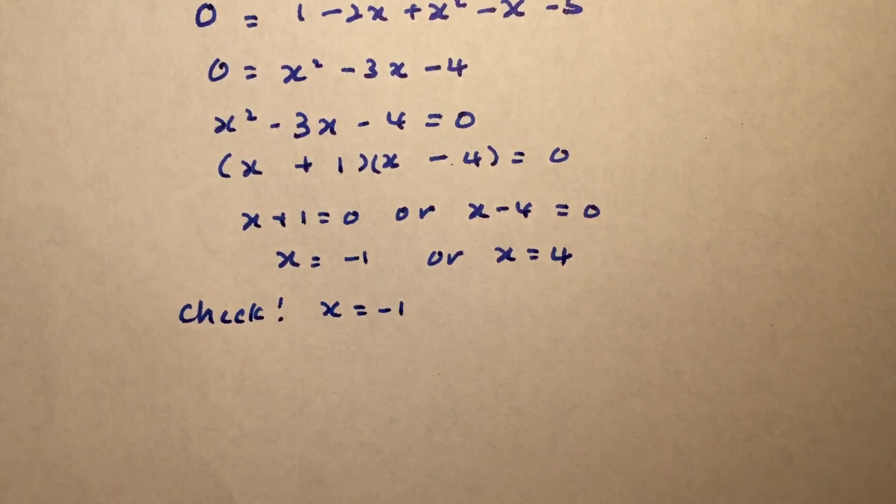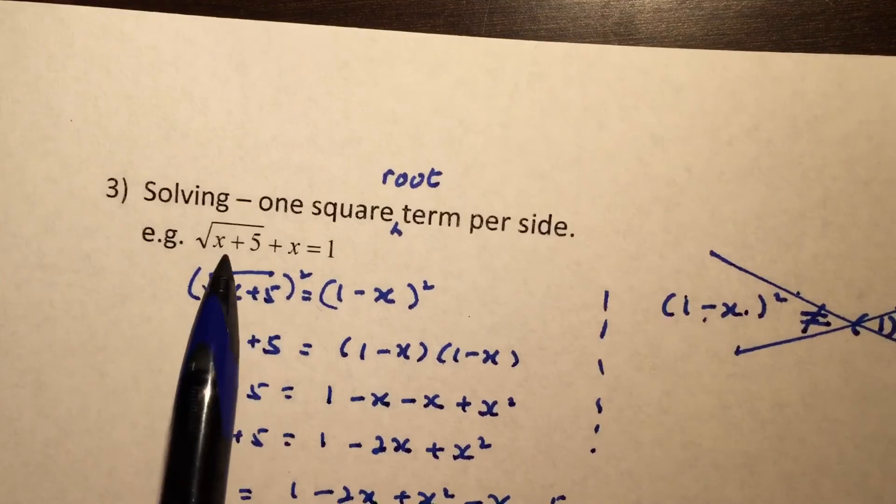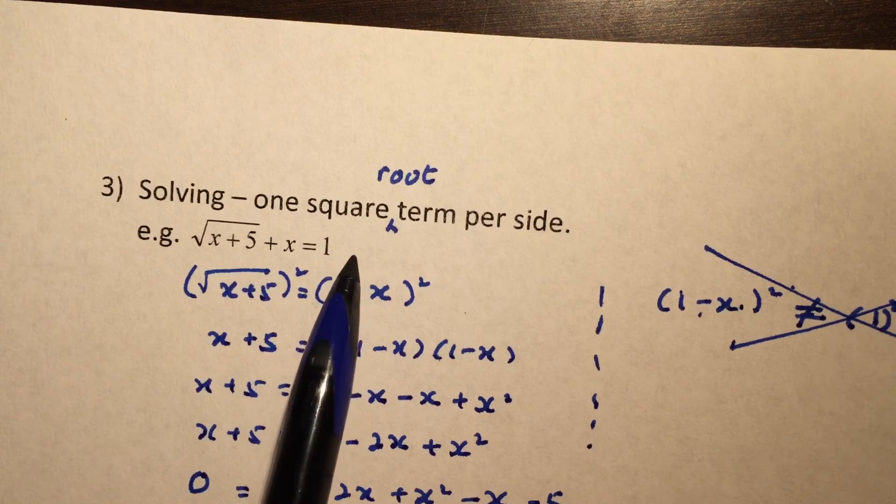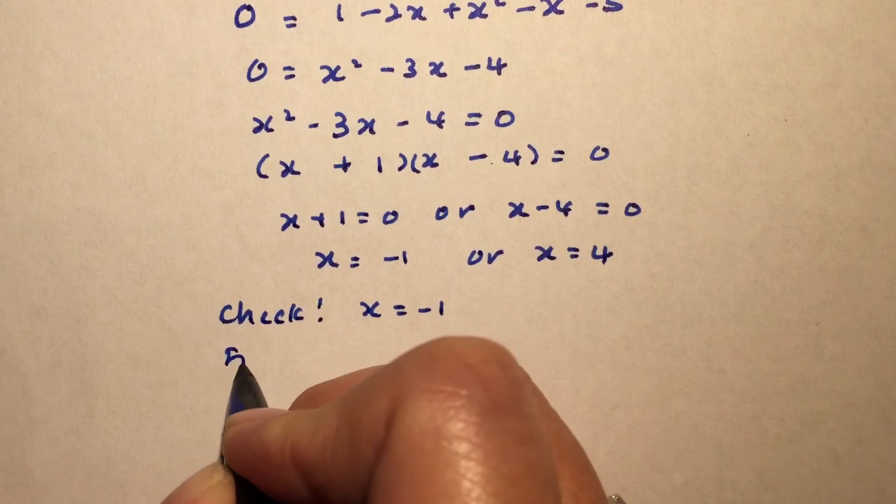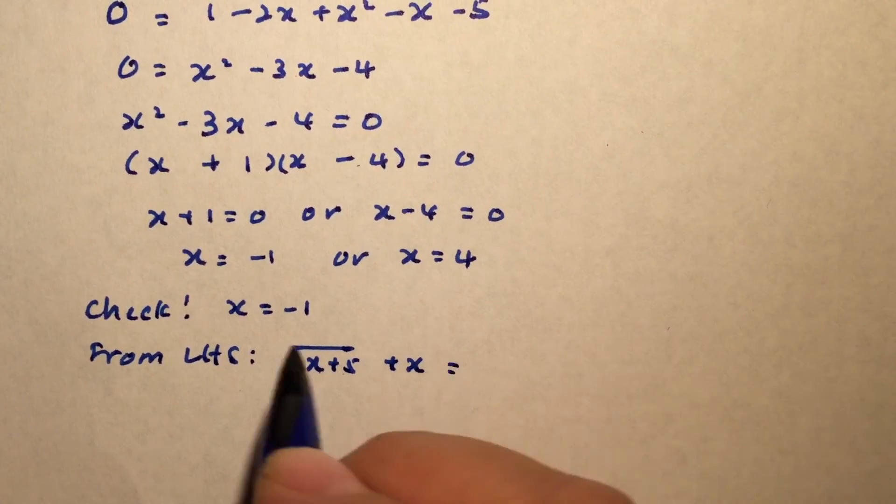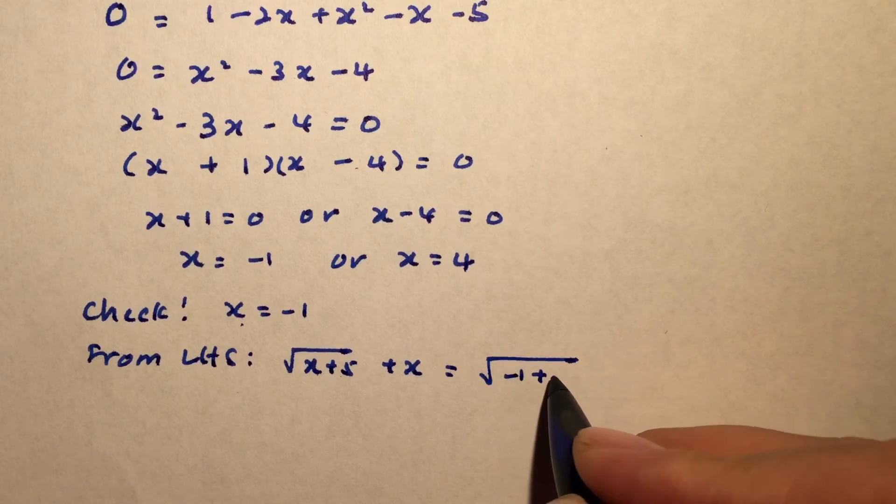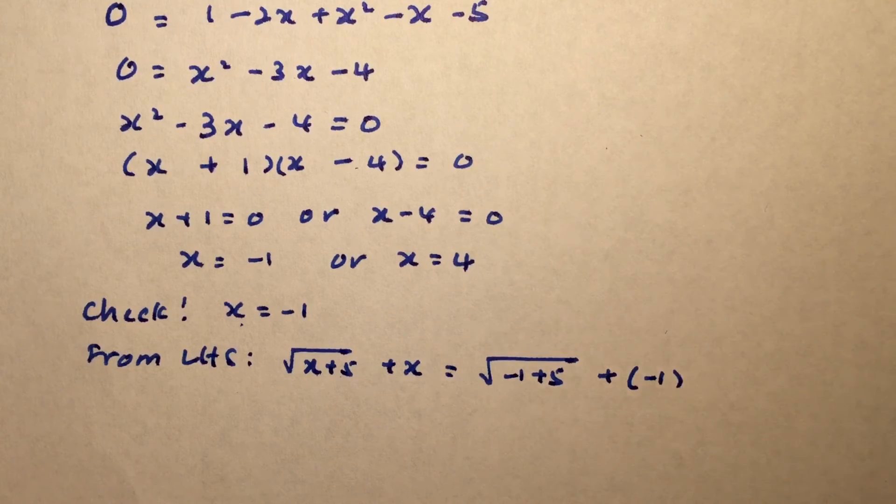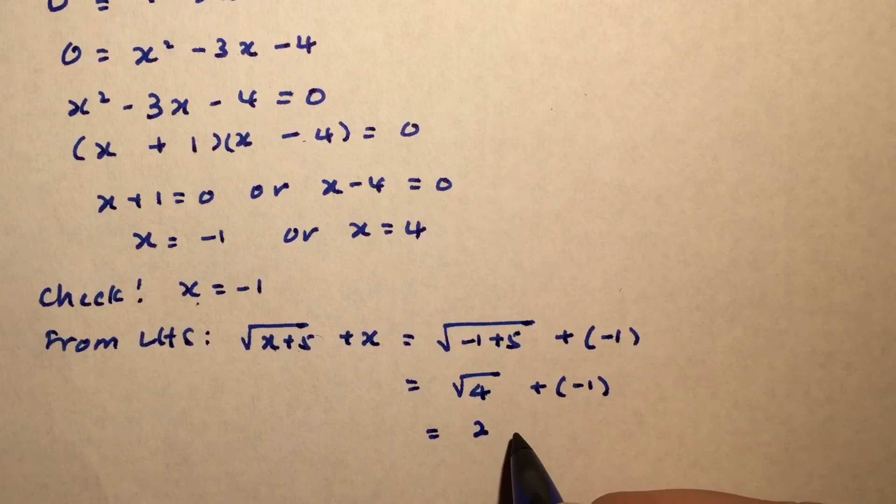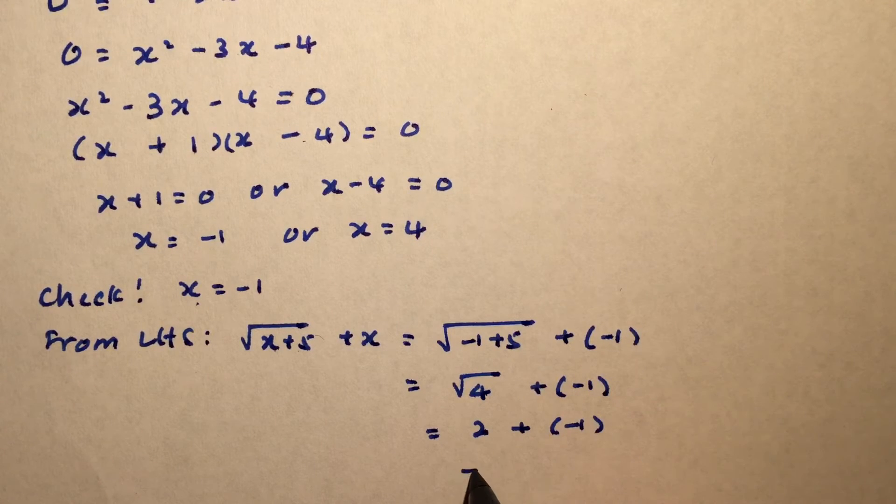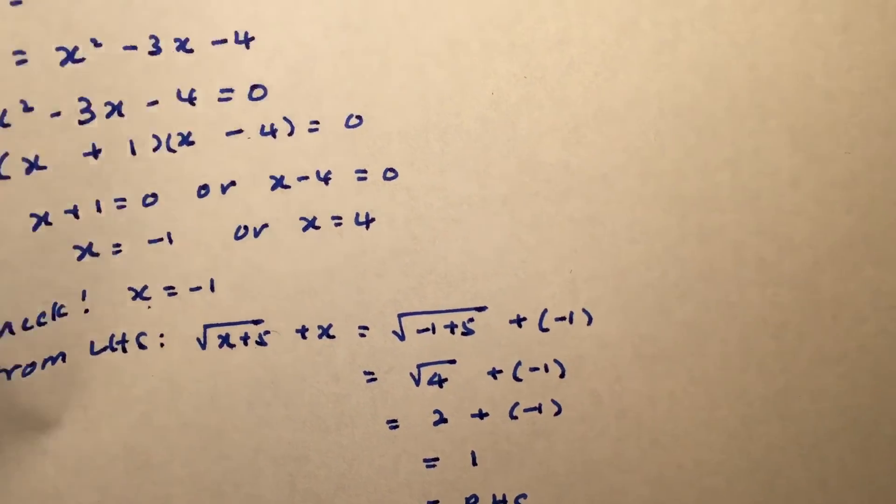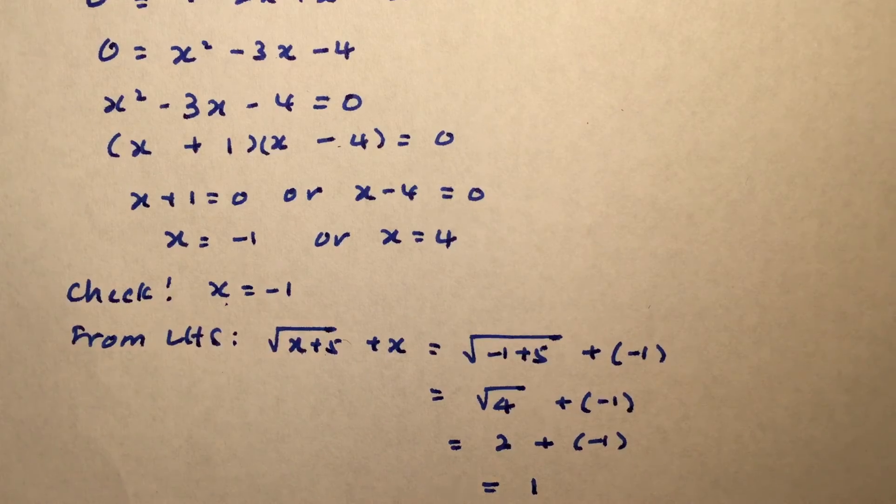We're going to check with x equals to negative 1. How do we actually do the check? We're going to find out whether the left-hand side of the equation, when we replace x value with negative 1, will it end up with 1. From left-hand side, we have x plus 5 plus x. For every x value, we're going to replace it with negative 1. We have negative 1 plus 5 plus negative 1. Negative 1 plus 5 is 4. We have square root 4 plus negative 1. Square root 4 is actually the same as 2. 2 plus negative 1 is the same as 2 minus 1, which will give us 1. And it's the same as the right-hand side. We do know that this one is going to be a valid answer. This is okay.